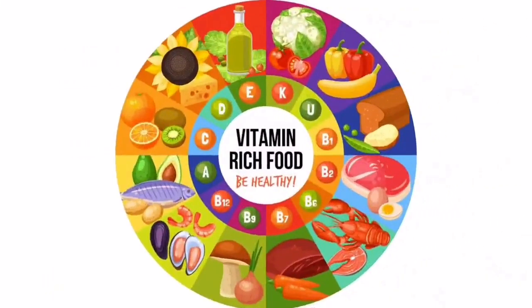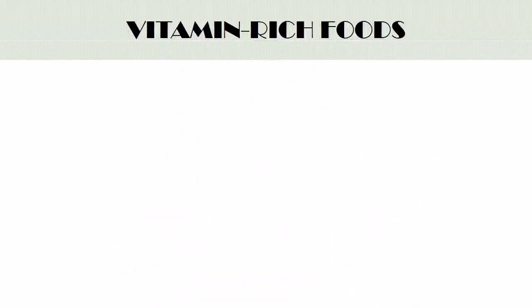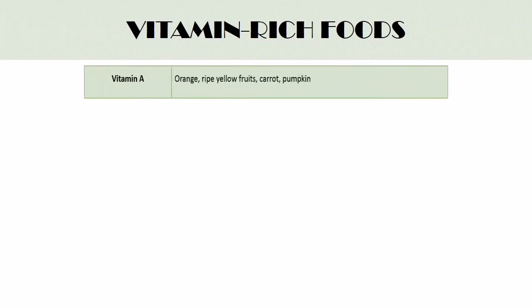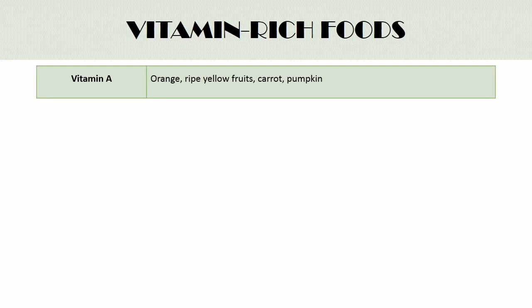Now let's take a look at different sources of vitamins. These are examples of various vitamin-rich foods. Vitamin A is found in foods such as orange, ripe yellow fruits, carrots, pumpkin, etc.